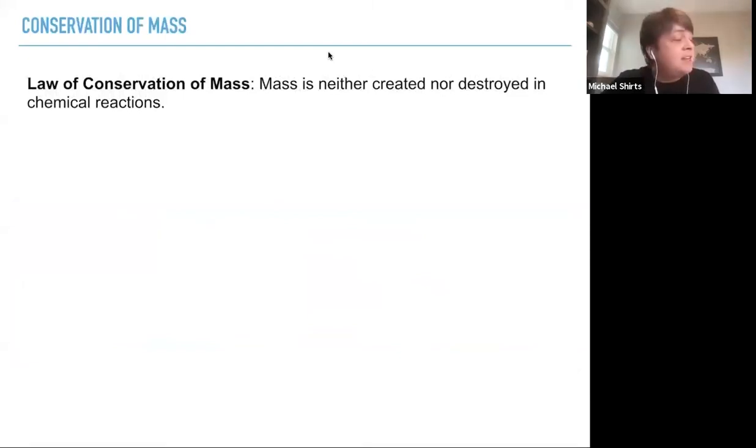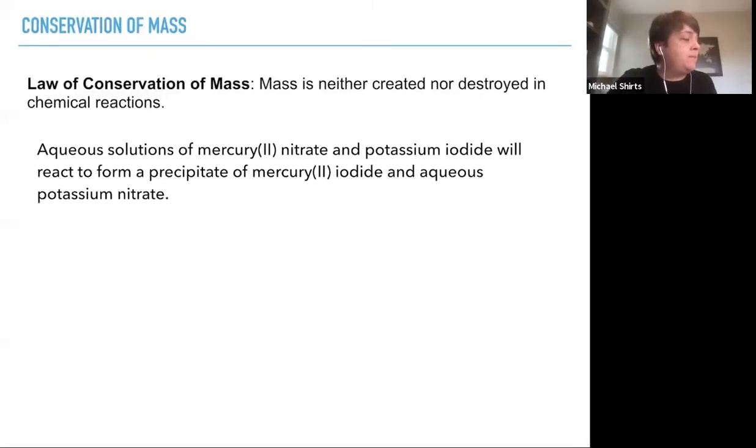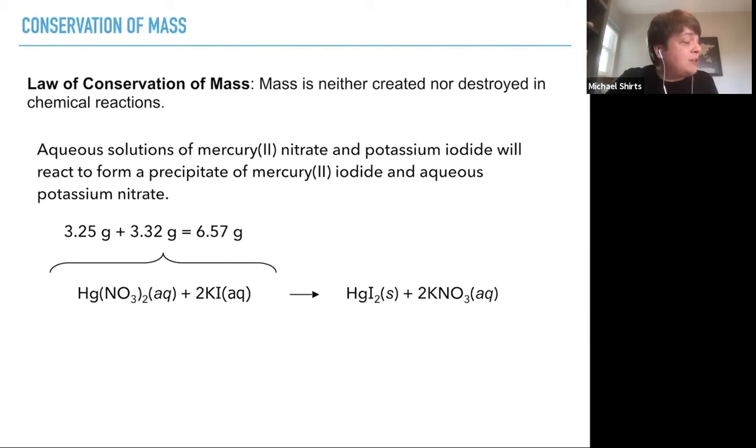Another important conservation law is the law of conservation of mass, that mass is neither created or destroyed in chemical reactions. So for example, take an aqueous solution of mercury nitrate and potassium iodide will react to form a precipitate of mercury iodide and aqueous potassium nitrate. So if we have say 3.25 grams of mercury nitrate and 3.32 grams of potassium iodide and those react completely and we're very careful and we don't lose anything on the side of the beaker, then we will get 4.55 grams of mercury iodide and 2.02 grams of potassium nitrate to add up to 6.57 grams. So in these chemical reactions, we are not destroying mass. The mass stays the same, which is really nice. Whenever you have this sort of constraint, you've got an equation that you can use in solving problems.